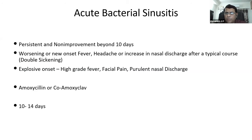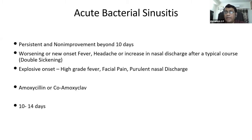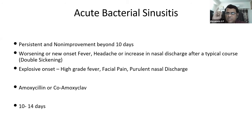Bacterial sinusitis should be suspected when symptoms persist beyond 10 days without improvement after an upper respiratory infection, when there is 'double sickening' — initial improvement followed by worsening with fever, headache, and mucopurulent nasal discharge — or when there is an explosive onset on day 1-2 with a toxic child, facial pain, and purulent discharge. Persistent, worsening, or explosive onset symptoms justify starting an antibiotic. Amoxicillin or amoxicillin-clavulanate for 10-14 days in usual doses.